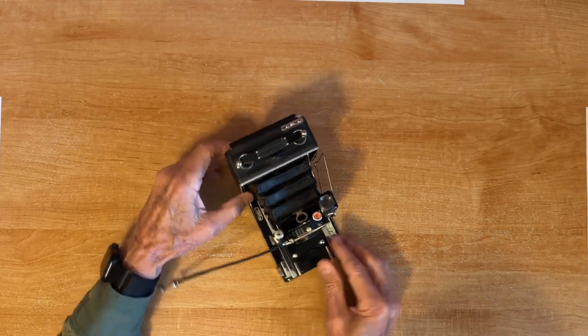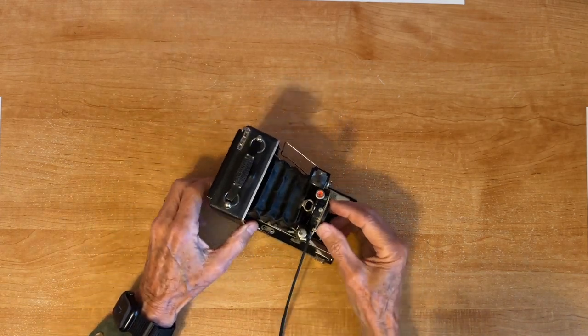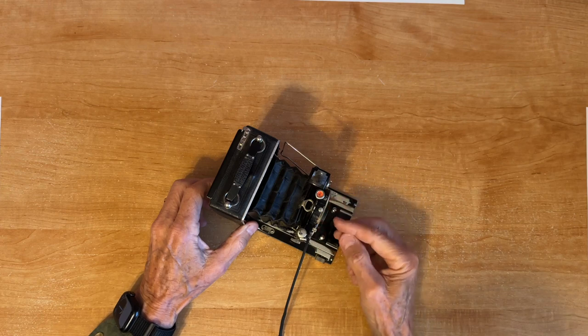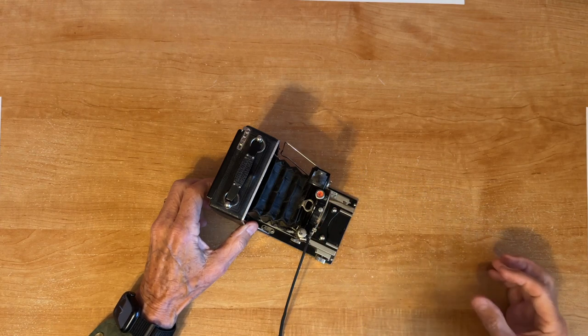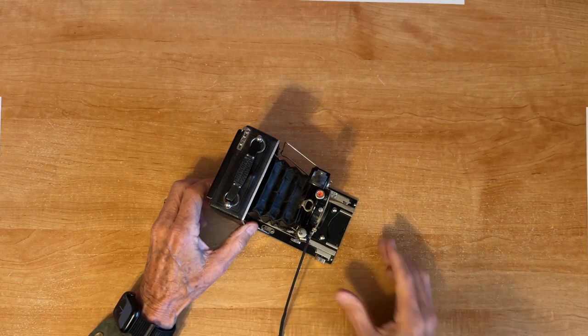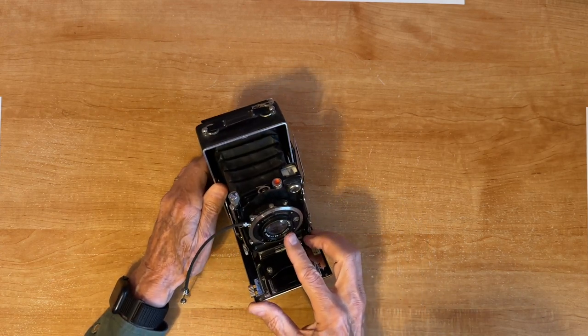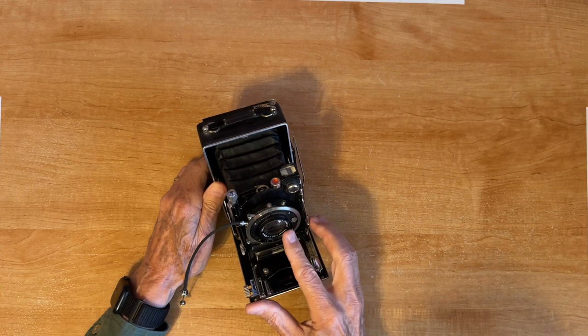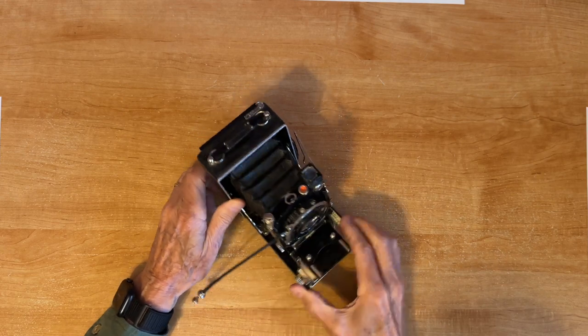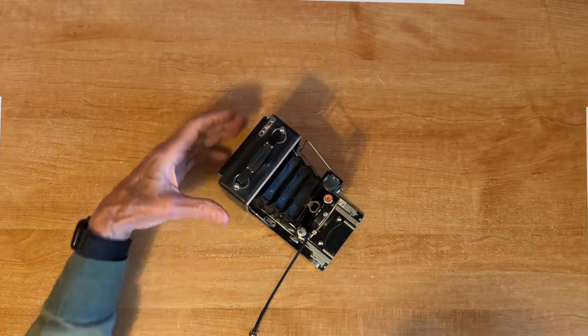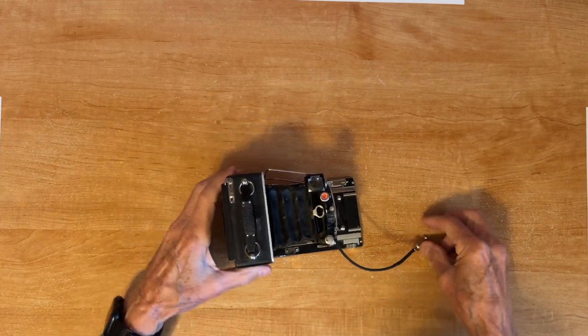Some lenses, not this one, have a removable front element. And when you remove that front element then you can focus much closer on just the back lens which is kind of strange. This particular Carl Zeiss lens is not removable as far as I know.